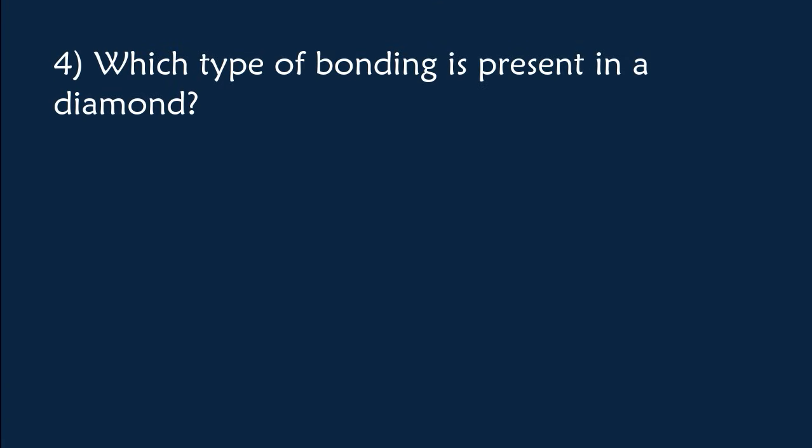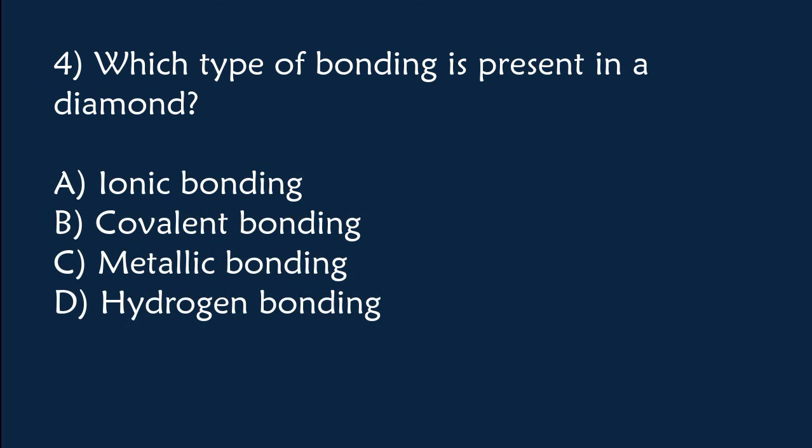Which type of bonding is present in a diamond? A) Ionic bonding, B) Covalent bonding, C) Metallic bonding, D) Hydrogen bonding. The correct answer is Option B, Covalent bonding.